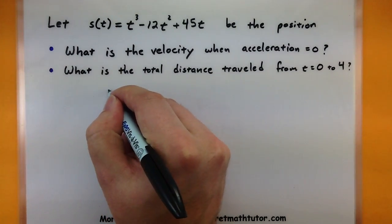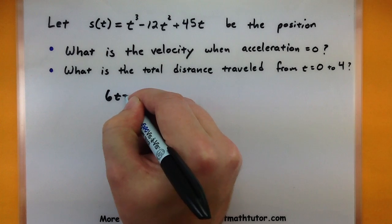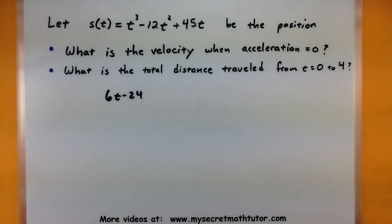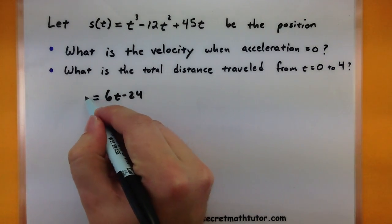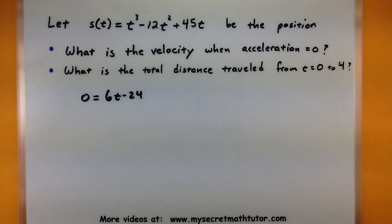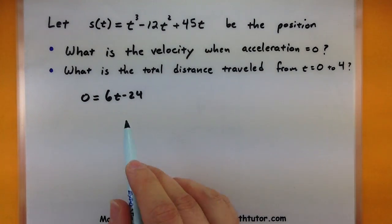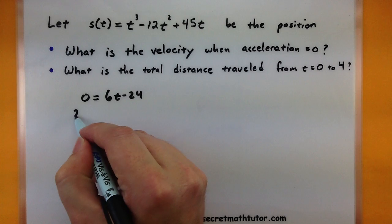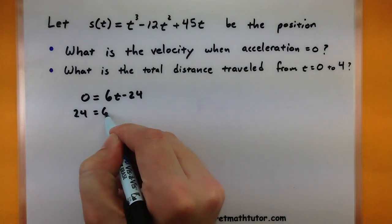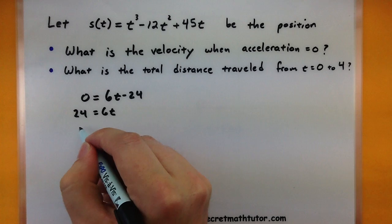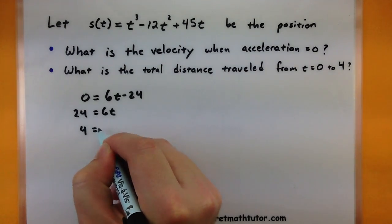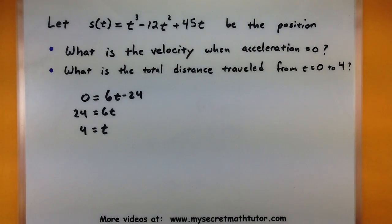So our acceleration was 6t - 24. And we want to know where is this thing equal to zero? So solving this, I can move the 24 to the other side. And then divide both sides by 6, giving me a 4.